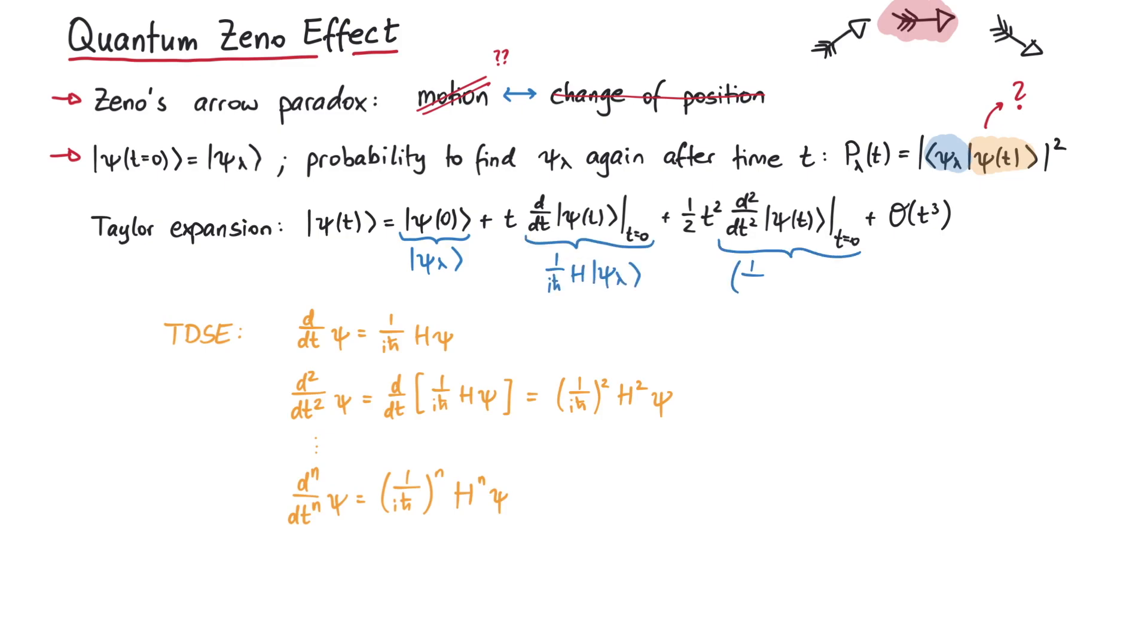Therefore, we can simplify our Taylor expansion and write psi of t as psi lambda minus i t over h-bar H psi lambda minus t squared over 2 h-bar squared H-squared psi lambda plus higher order terms.